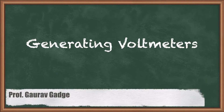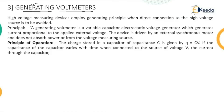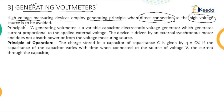We are studying our third method of measurement of high DC voltage — the generating voltmeter. This method employs a generator which generates that high DC voltage to be measured. High voltage measuring devices employ the generating principle, called the generating voltmeter, which avoids the direct connection of the high voltage source to the voltmeter.